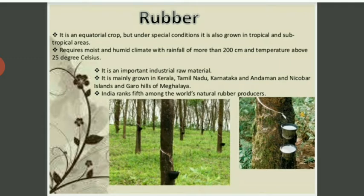Regarding the climatic conditions of rubber: it is an equatorial crop, but under special conditions it is also grown in tropical and sub-tropical areas. It requires a moist and humid climate with rainfall of more than 200 centimeters.